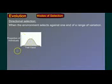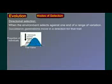But if we select against one end of the range, what happens? Well, successive generations will move this population in a direction. If each generation we select against this end of the range, then the average look of the population will shift. We call that directional selection.